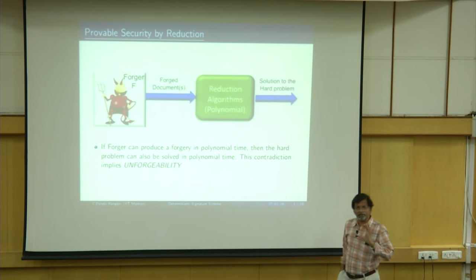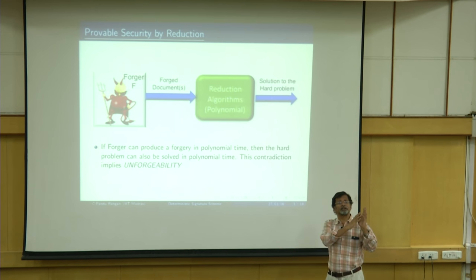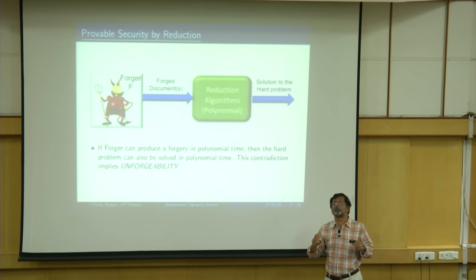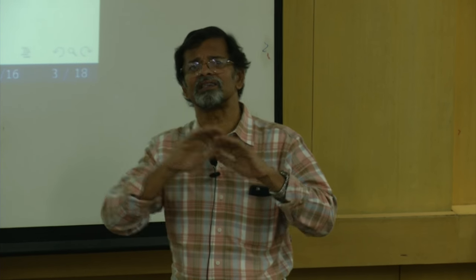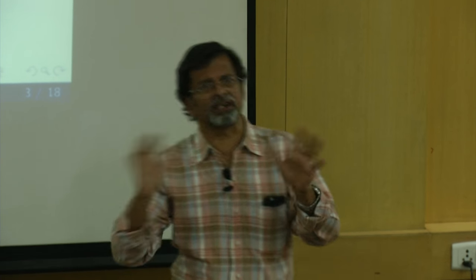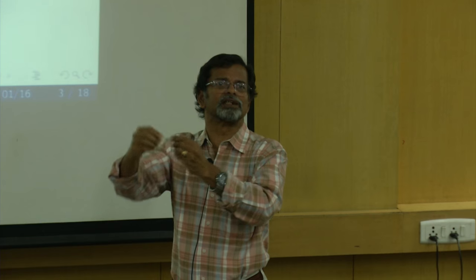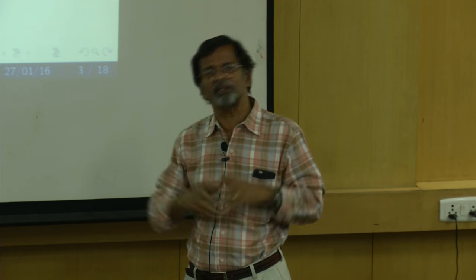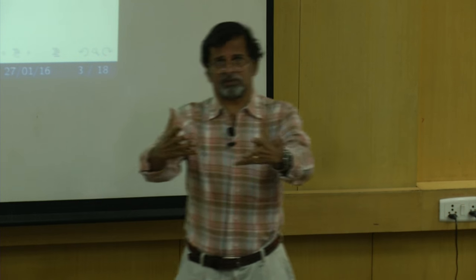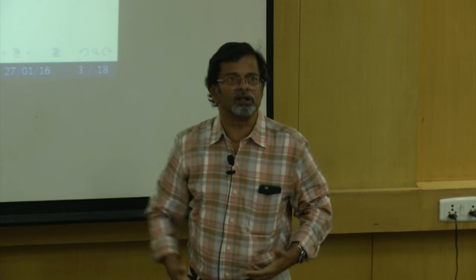But then how do we prove security? In cryptography in the early days, something being secure was argued by combinatorial complexities, saying it will take so many million attempts to break the system. Such things are not scientific; there is no justification for simply counting certain possibilities and arguing that it is very difficult to crack. Unfortunately, that is how it was done for a while, but later on people tried to formalize the manner in which we can argue for security.